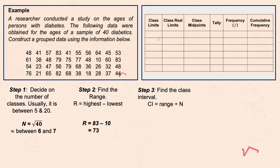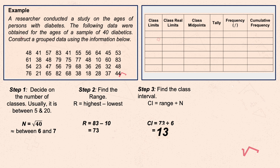For step 3, find the class interval by dividing the range from step 2 by the number of classes from step 1. Two important reminders: the result must always be rounded to a whole number, and it must be odd. Since 73 divided by 6 gives 12.17, we apply these restrictions. We cannot go down to 11 (which is odd but lower), so we round up to 13, which satisfies both conditions — it is a whole number and it is odd.